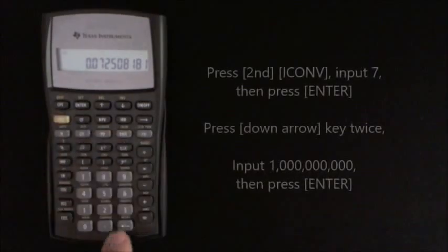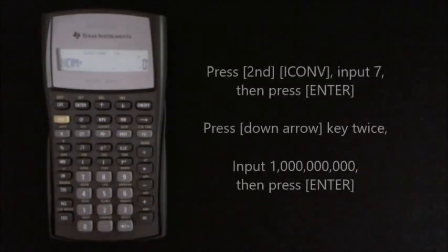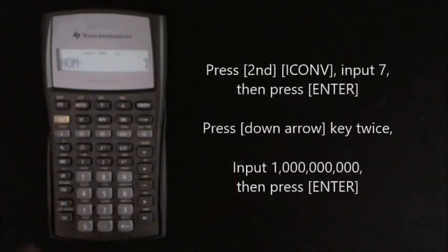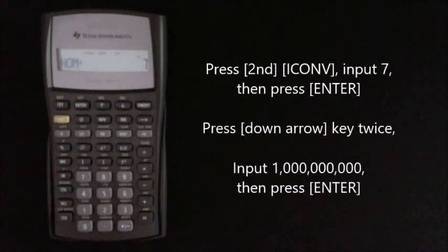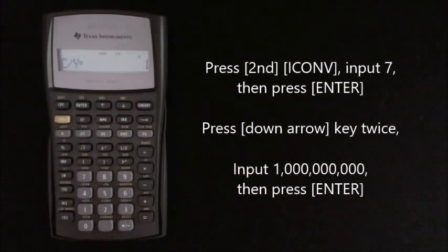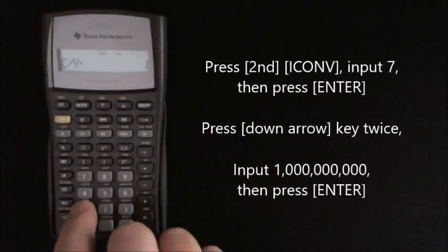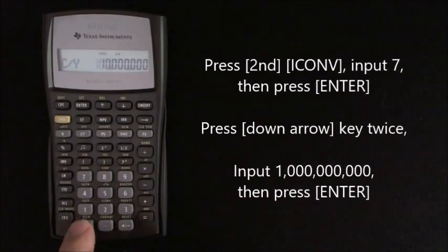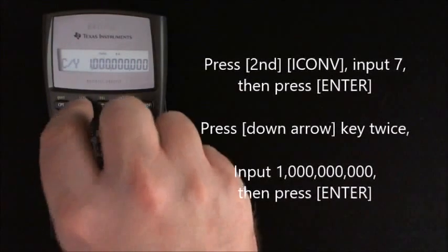So you press the second, and then the ICONV button, and input the number 7, and press enter. And then you press the down key twice, and input one, and then nine zeros, and then press enter.